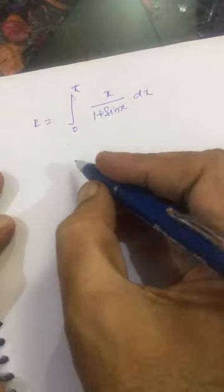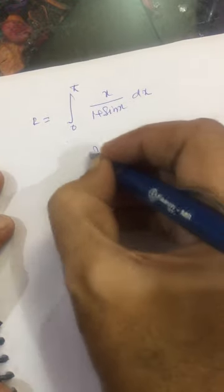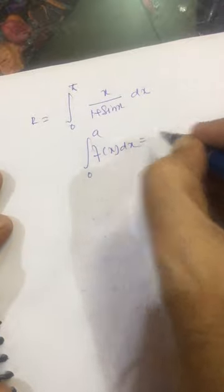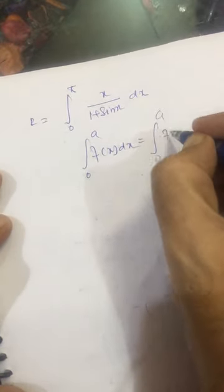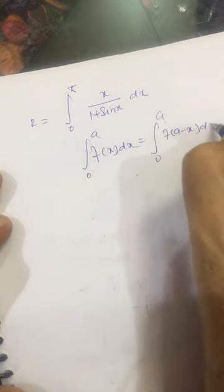Let us denote this as i. We will use the integral theorem: integral 0 to a of f(x) dx is equal to integral 0 to a of f(a minus x) dx.